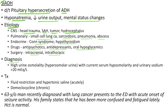For diagnosis of SIADH, there will be high urine osmolality (hyperosmolar urine) with concurrent serum hypoosmolality and elevated urinary sodium. For treatment, we have to advise fluid restriction and hypertonic saline for acute treatment. For chronic cases we have to prescribe demeclocycline. Clinical case: A 63-year-old man recently diagnosed with lung cancer presents with acute onset of seizure activity. His family states he has been more confused and fatigued lately. Hematocrit is normal. SIADH is an important paraneoplastic syndrome of small cell lung cancer. Normal hematocrit rules out dehydration.